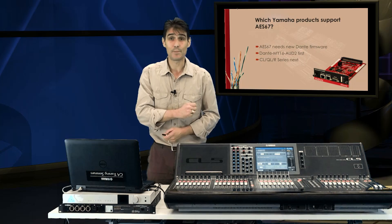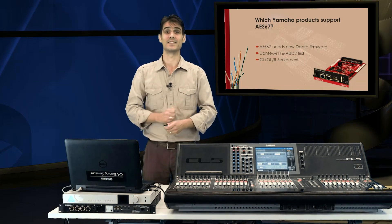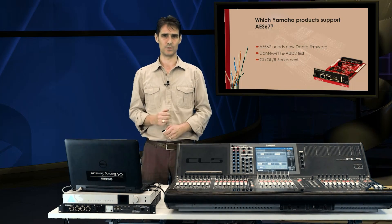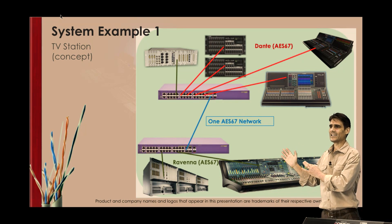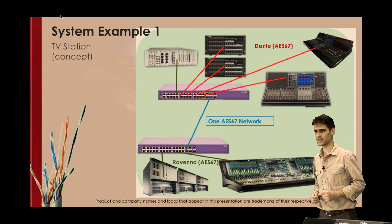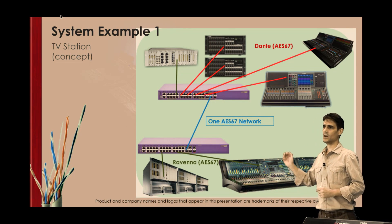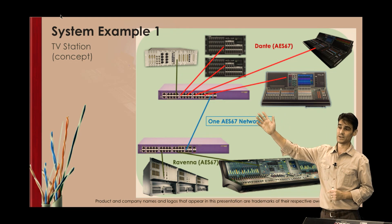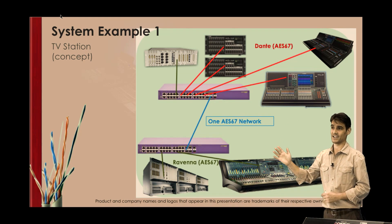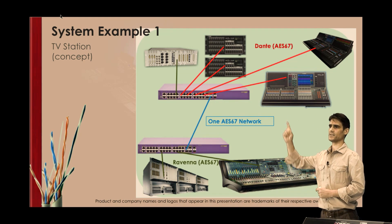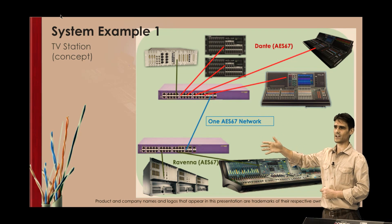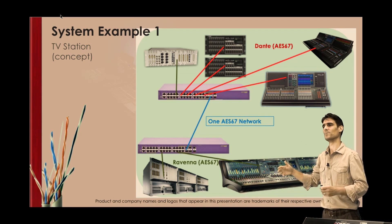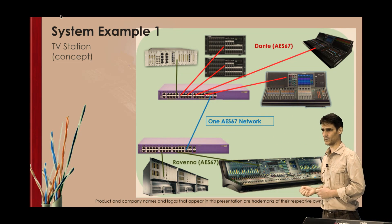Let's finish with a couple of AES67 system examples. Here is a Dante live sound system in a TV station. All the equipment is transmitting in AES67 mode, and the CL and R series devices can share audio with the other audio network equipment.